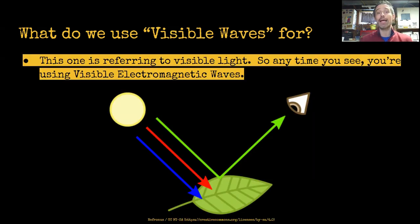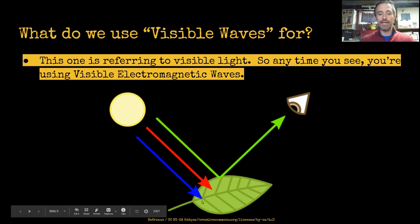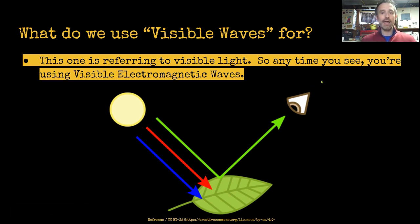Moving on: visible light waves. This is normal light. Anytime you see, you're using visible electromagnetic waves. We have electromagnetic waves in the spectrum of visible light — red, orange, yellow, green, blue, indigo, violet — and that's the way our brain interprets those electromagnetic waves. Some of them get absorbed into the surface of something: red and blue are being absorbed, but green is bouncing off that leaf into the eye, hitting the optic nerve at the back of our eye, and then our brain interprets that as the color green.